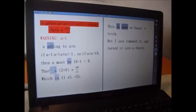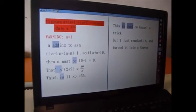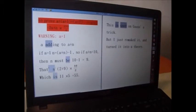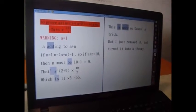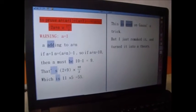So if a plus n equals 10, then n must be 10 minus 1, which is 9. That's 2 plus 9 times 10, 10 divided by 2, which is 11 times 5, equals 55.